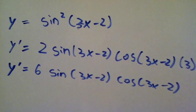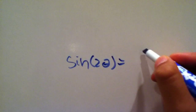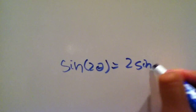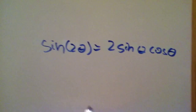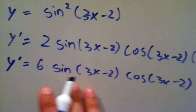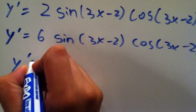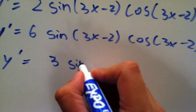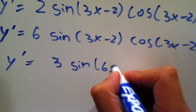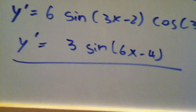Using the trig identity sine of 2 theta equals 2 sine theta cosine theta, we can apply that here since we have 6 times sine times cosine — which is 3 times 2 sine theta cosine theta. So y prime simplifies further to 3 sine of 6x minus 4, and that's the simplified form.